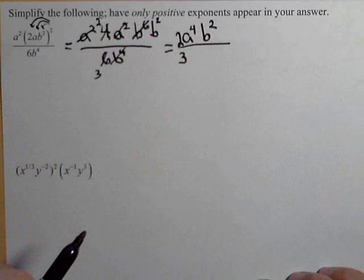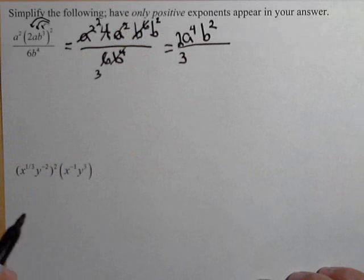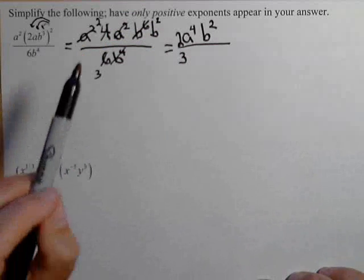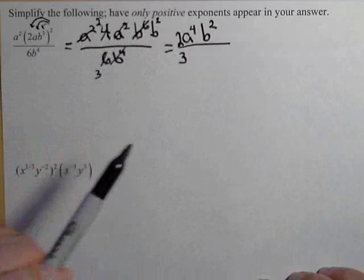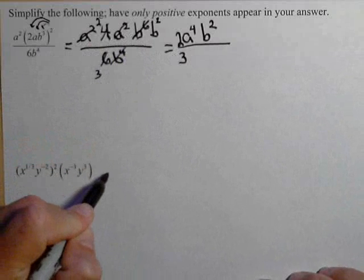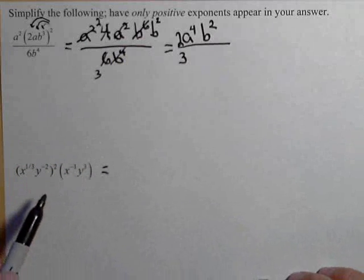And there is our simplified expression. Now, this does say to make sure we have only positive exponents. All the exponents are positive, everything looks good in this one. In the second one, we might have to do something to take care of that.